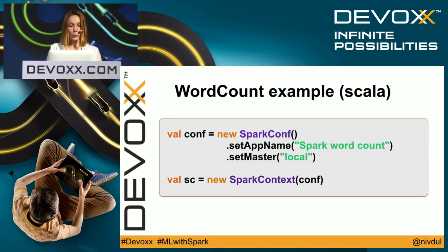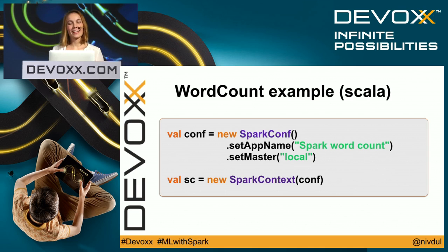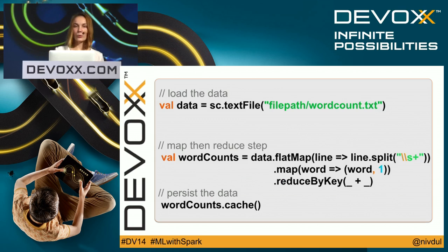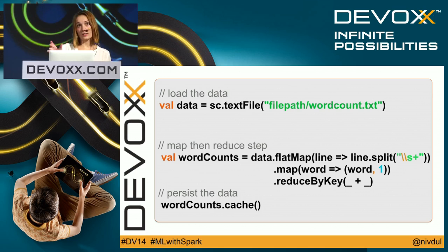I have a text file with words, and I just want to know how many times each word appears in the file. The first thing to do is create a SparkContext, which represents the connection to the Spark cluster. For the SparkContext, you need to create a SparkConf — that's all configuration information about your application. Then you load your data using the text file method, which directly creates an RDD.